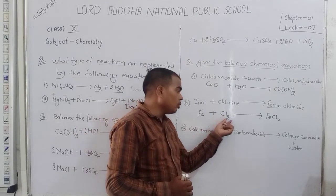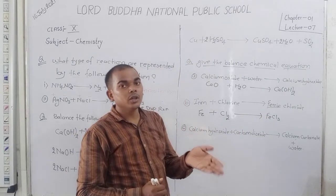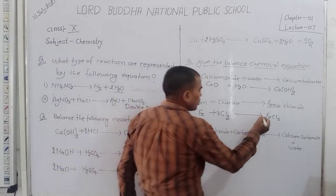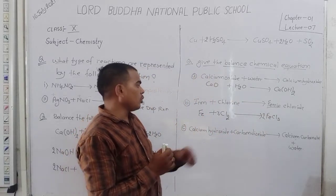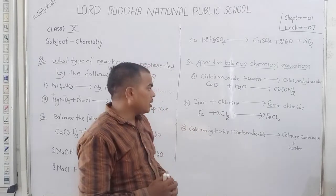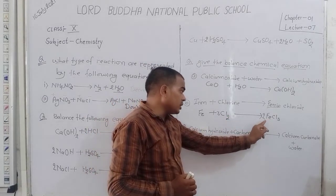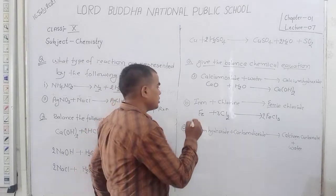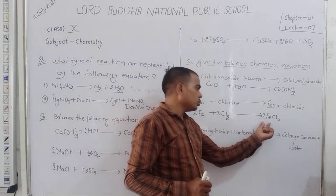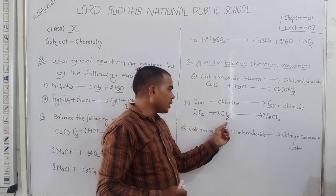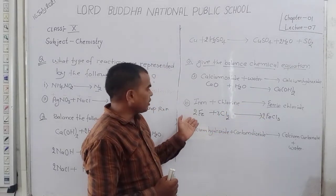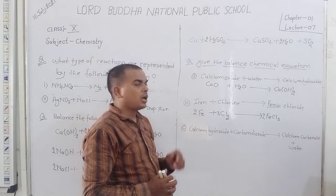For balancing chlorine atoms: write 3 before Cl2 and 2 before FeCl3. Now chlorine: 3 × 2 = 6 on the left, and 2 × 3 = 6 on the right — chlorine is balanced. But iron is now 2 on the right and 1 on the left — write 2 before Fe. Now iron: 2 on each side, chlorine: 6 on each side. Number of atoms on left and right are balanced — this is a balanced equation.